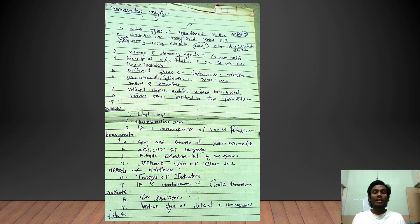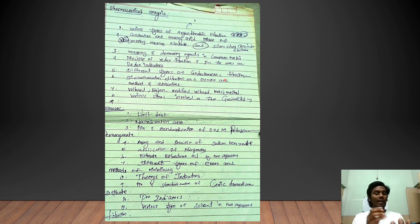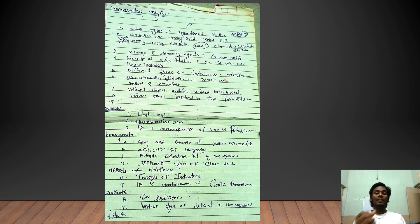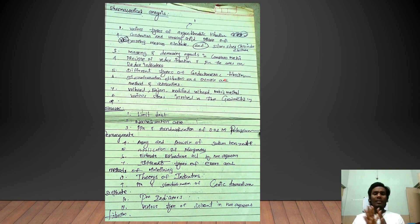The fifth question is different types of conductivity titrations. Examples include acid-base titrations: strong acid-strong base, and weak acid-strong base. Also covered are redox titrations — conductivity methods and their applications.